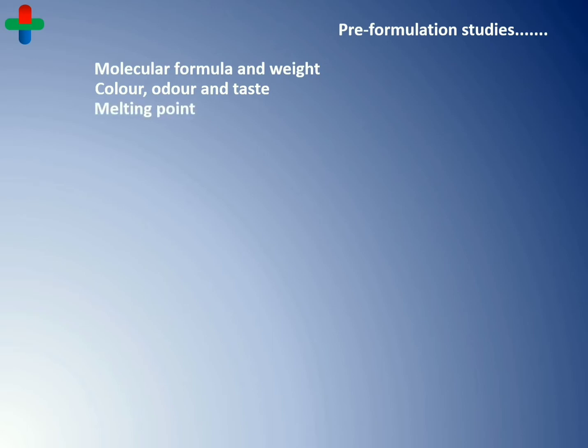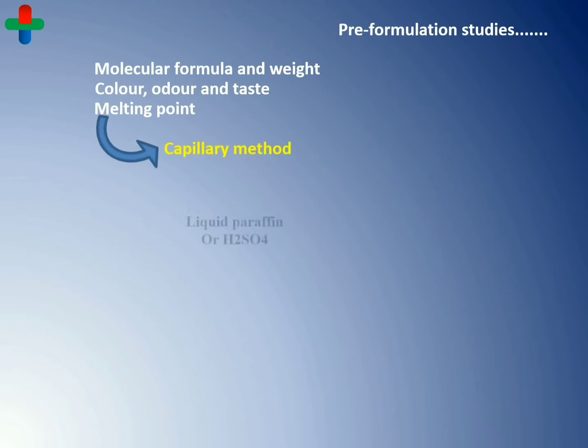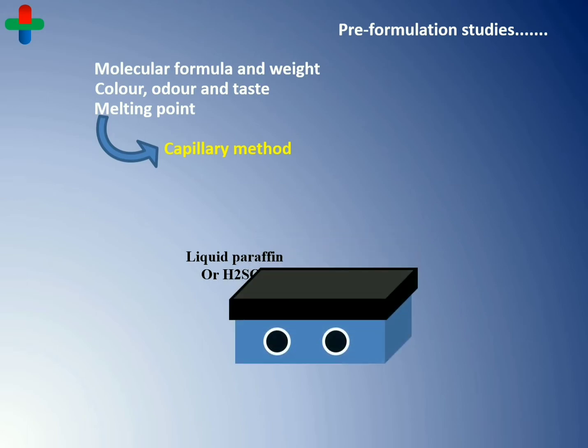After sensorial evaluation, the next point of discussion is melting point determination. The melting point is checked for a drug which is in solid state; it is one of the characteristic features of drugs. It can be measured by the capillary method. In this method, liquid paraffin or sulfuric acid is used because they boil at very high temperatures — 370 degrees Celsius and 337 degrees Celsius respectively.